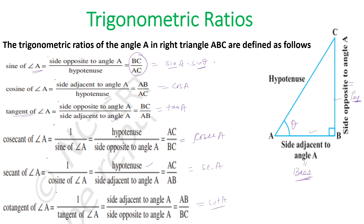We observe that sine and cosecant are reciprocals of each other, cosine and secant are reciprocals of each other, and tangent and cotangent are reciprocals of each other. These are the six important trigonometric ratios.